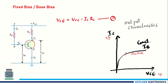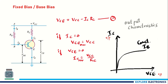We need to use the active region and fix a point within it, defined by specific values of VCE and IC — this becomes the operating point. To find this operating point, we use the load line method. When IC·RC = 0 (i.e., IC = 0), VCE reaches its maximum value equal to VCC. When VCE = 0, IC reaches its maximum value of VCC / RC.